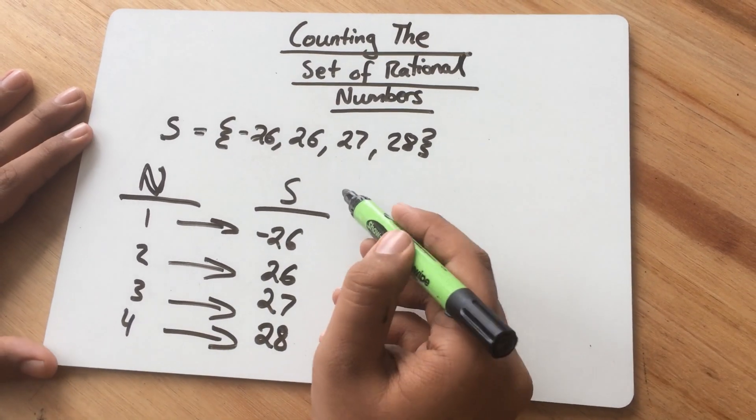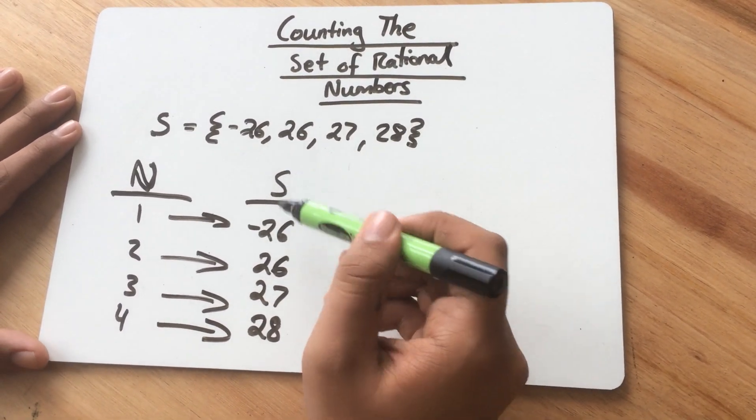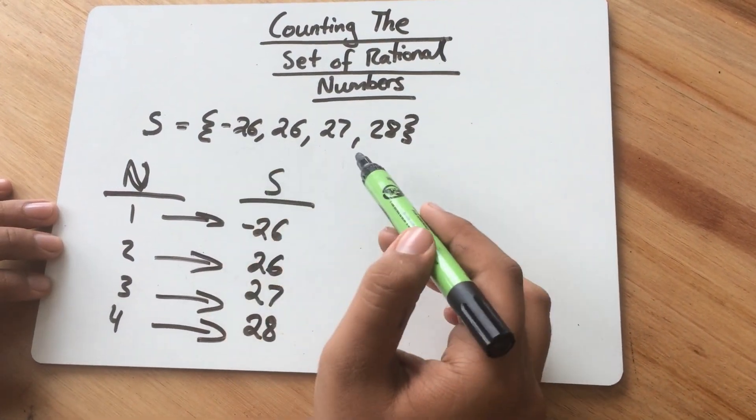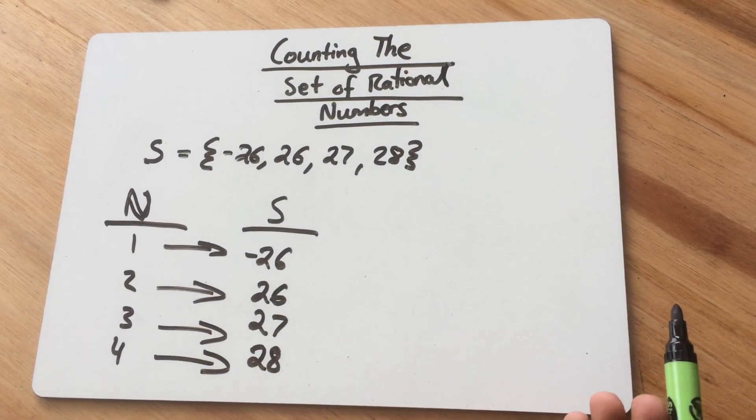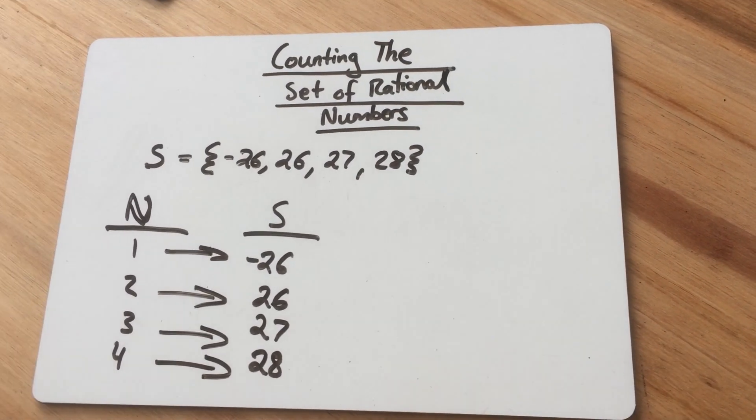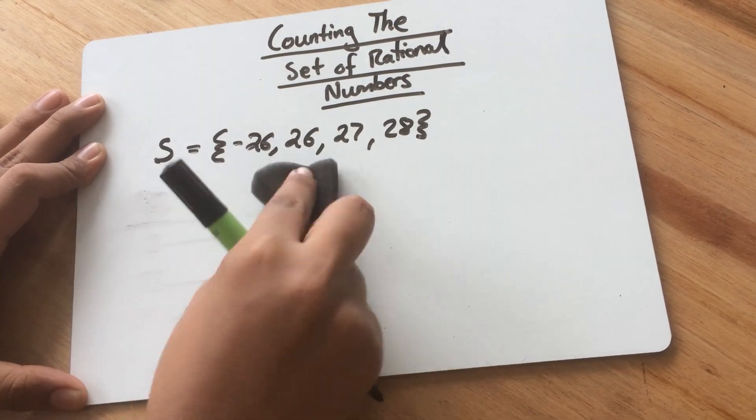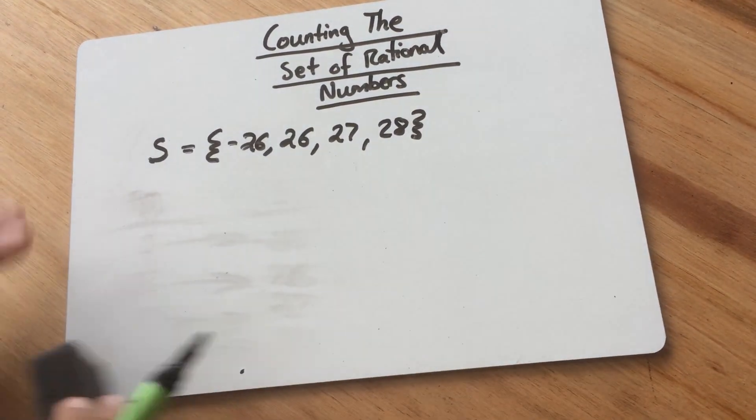So, of course, that is a fancy way of saying we have to put the elements of S in order. So for a set to be countable, its elements must be placed in a specific order. And if you didn't notice, the numbers were also placed in increasing order there.